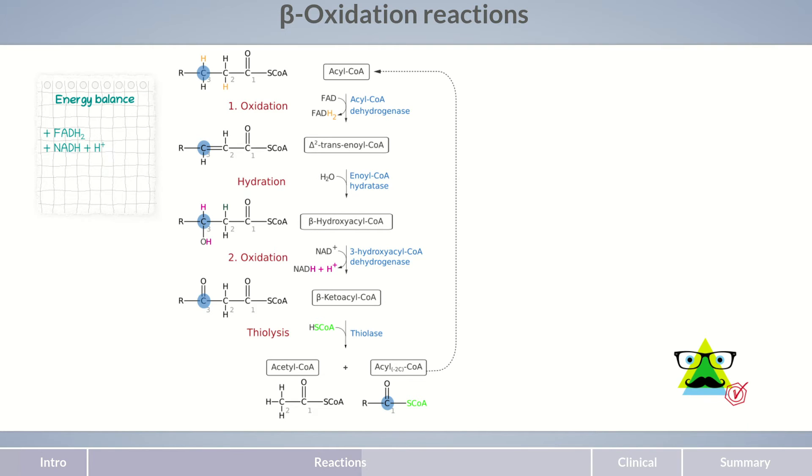Let's look at the energy balance of beta-oxidation. Each cleavage of a C2 unit yields a total of two reducing equivalents, one FADH2 and one NADH and H+. In contrast to glycolysis, fatty acid degradation doesn't directly provide ATP. Nevertheless, fatty acids are a good energy store as they provide reducing equivalents to the electron transport chain to yield ATP.